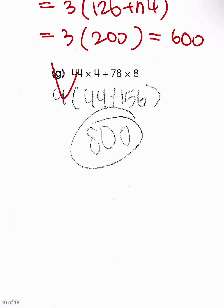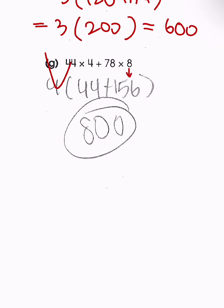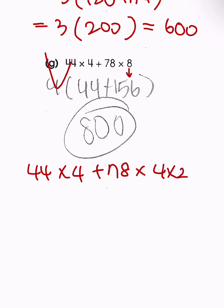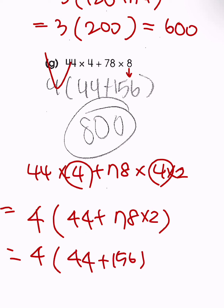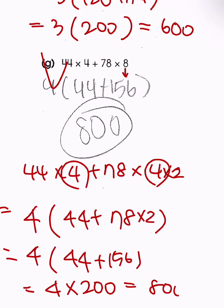For problem G: express 44 times 8 plus 78 times 8 times 2 as 44 times 4 plus 78 times 4 times 2. Grouping by 4: 4 times (44 plus 78 times 2) = 4 times (44 plus 156) = 4 times 200 = 800.